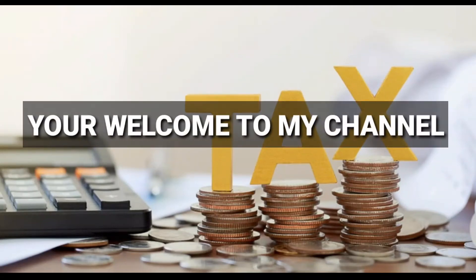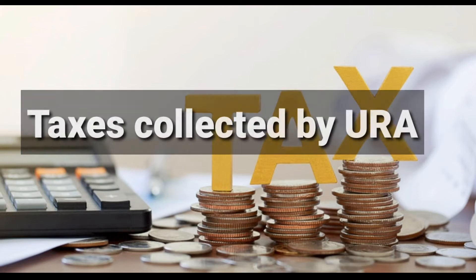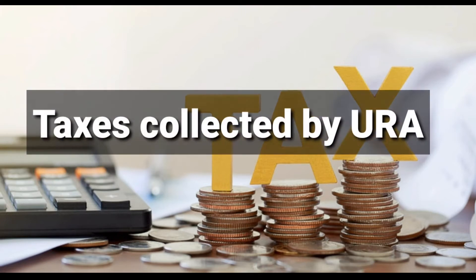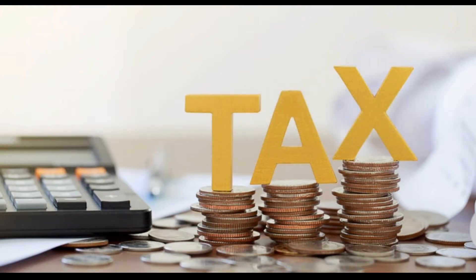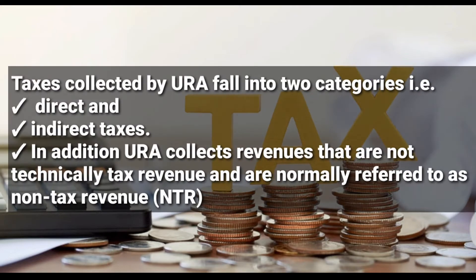Welcome to my channel. We are still continuing with topic two, Elements of Taxation, which covers the background of taxation and the general taxation structure in Uganda. Under this, we shall be looking at the taxes collected by the Uganda Revenue Authority, which is URA. Taxes collected by URA fall into two categories: direct and indirect taxes.